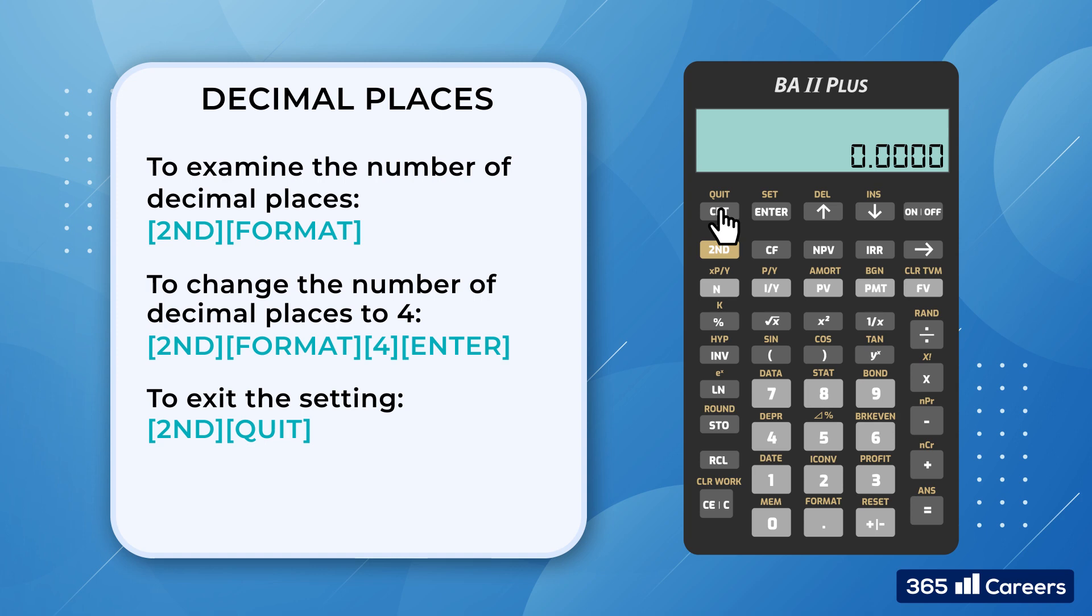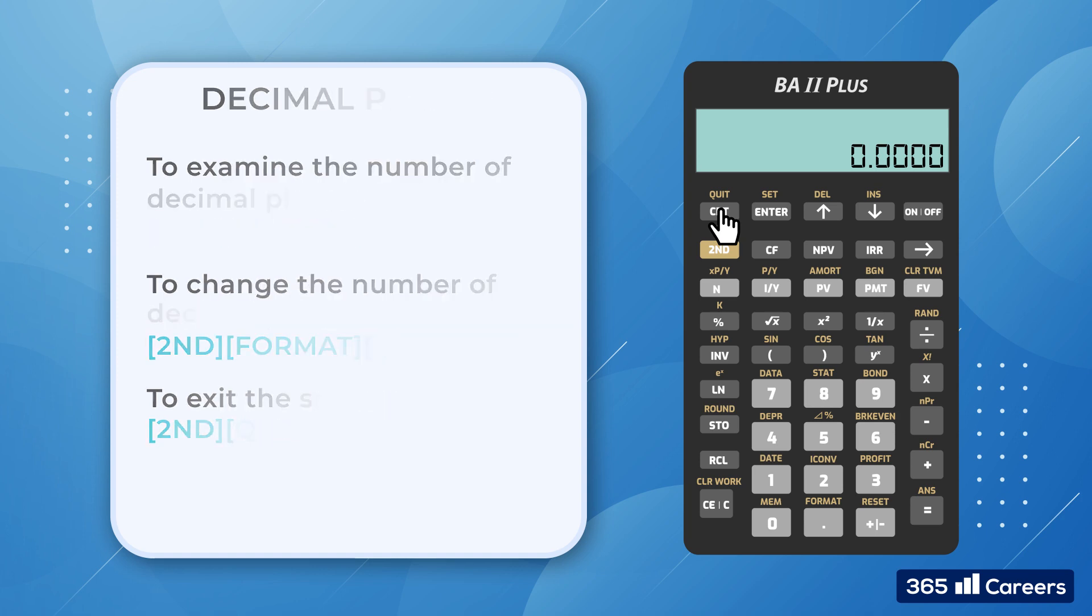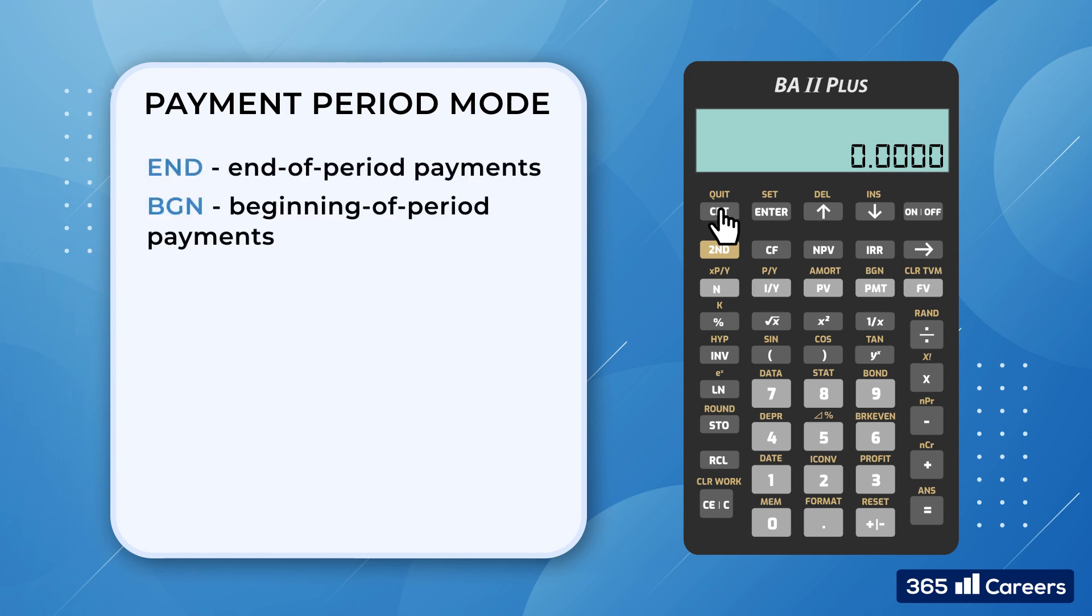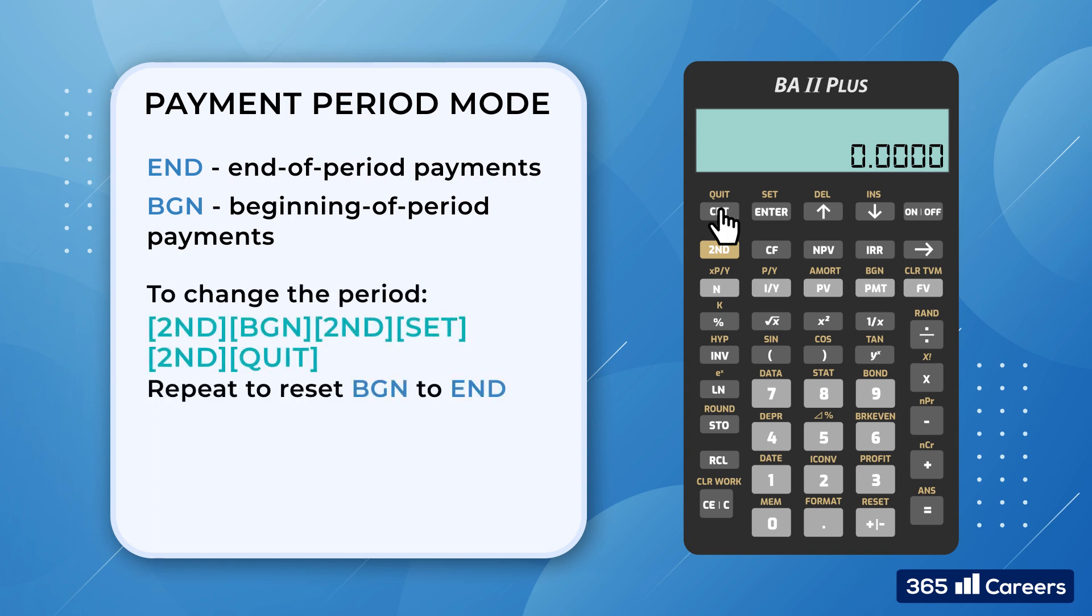There are a few additional details that we need to take care of before we're ready to move on. We have to set the calculator to end of period payment mode. It specifies that payments occur at the end of each payment period. Also, when you buy it, that's the default setting on the calculator. On the other hand, if that's not the case, then we need to press 2nd BGN 2nd Set 2nd Quit. You could easily recognize the payment mode of the calculator when you turn it on. If you see a BGN at the top of the display, then it's set to beginning mode and we need to change it. The only time we will use the BGN mode is when we solve annuities due.